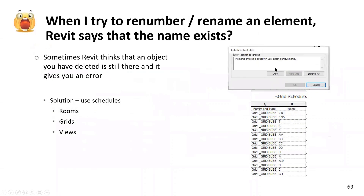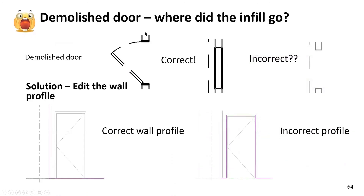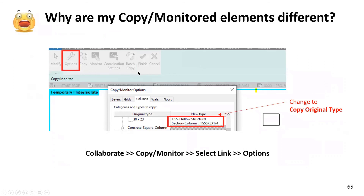Common errors: 'Name entered is already in use' — this happens a lot with grids. Use a schedule to see what's placed and what's not; delete the duplicate and you're fine. For a demolished door/infill issue, fix the wall profile. For Copy Monitor elements appearing differently, go into Copy Monitor Options and make sure the new type is set to the correct family.